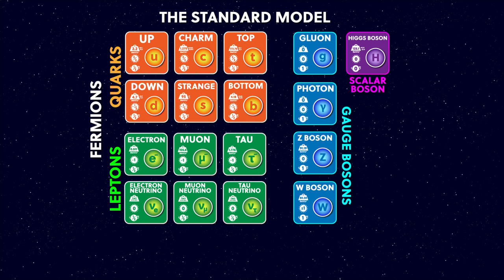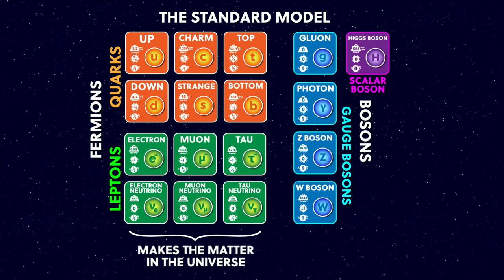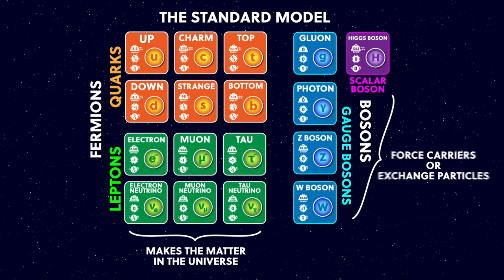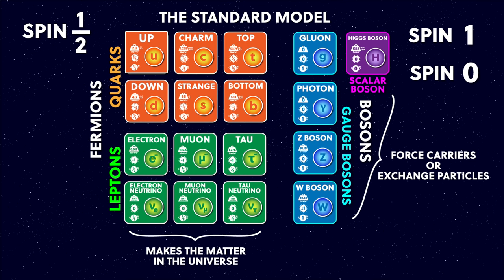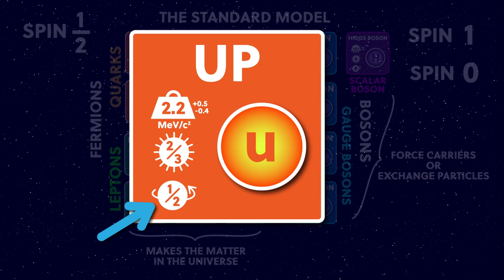These are called the fermions, and these are the bosons. Fermions make up the physical matter in the universe, and the bosons mediate how those matter particles interact with each other, and so are also known as force carriers, or exchange particles. But technically, the thing that sets them apart is a specific quantity called spin. The fermions all have a spin of a half, and the bosons have got a spin of one, or zero for the Higgs boson. You can see these values in the chart here.